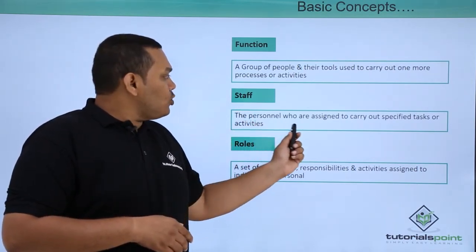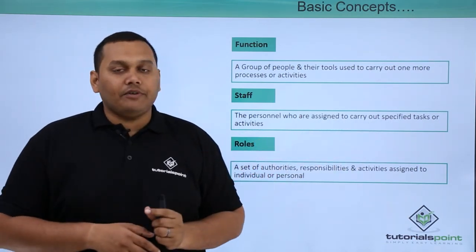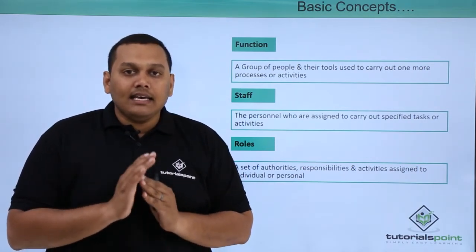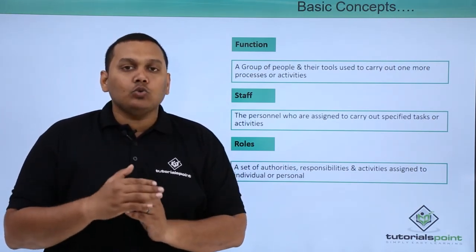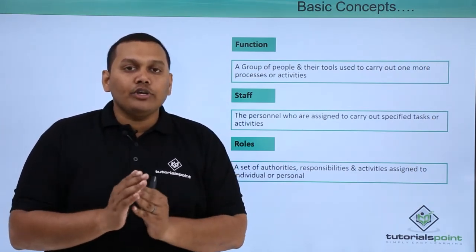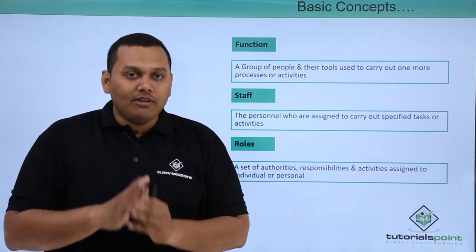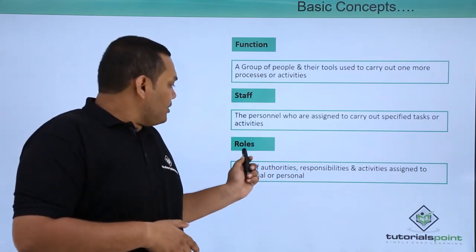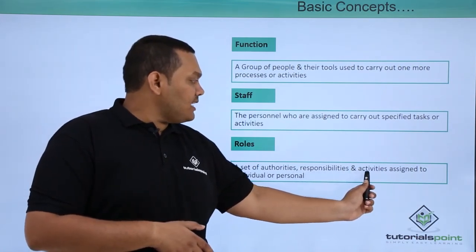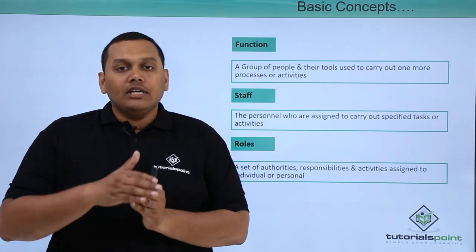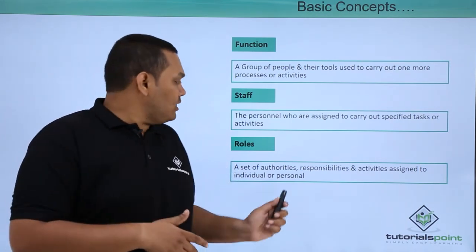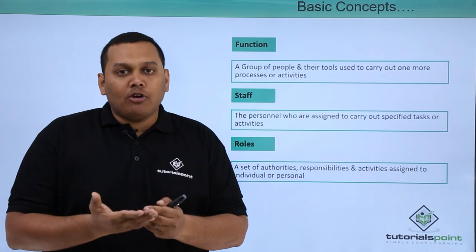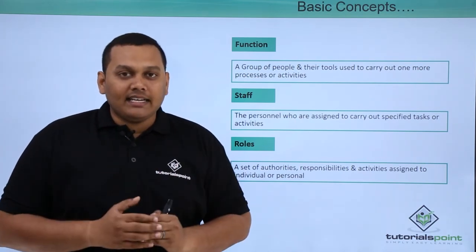Staff are the personnel assigned to carry out specific tasks or activities. After troubleshooting, the support team will assign your contact to a staff person or support person who is on the field. He will call you and be responsible for resolving your issue. Coming to roles: a set of authorities, responsibilities, and activities assigned to an individual. If that person has all these roles and responsibilities, he will rectify your problem, and if anything requires approval from higher management, he will obtain that approval.